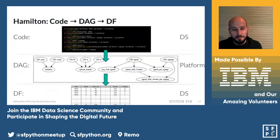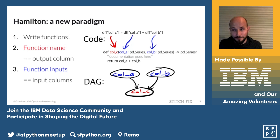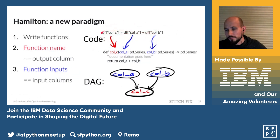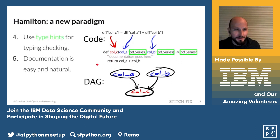On to Hamilton. At a high level, you write these special functions; they get translated to a DAG — a directed acyclic graph — and the data scientist gets a data frame out at the end. The paradigm is: you write a function where the name of the output column is the name of the function, and the input columns become input parameters. For example, to create column C from columns A and B, you write a function summing A and B. With Python 3.6+ type hints, we do rudimentary type checking, and documentation is natural using function docstrings.